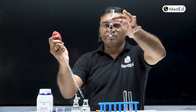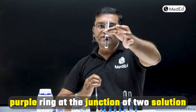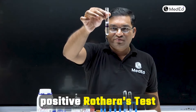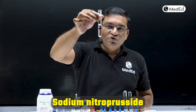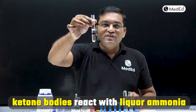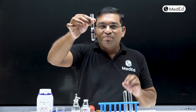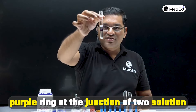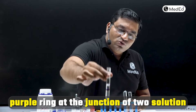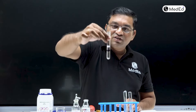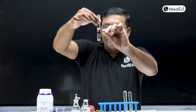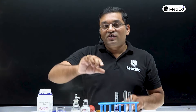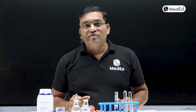The observation is a purple ring at the junction of the two solutions, which indicates a positive Rothera's test. In the presence of sodium nitroprusside, the ketone bodies react with the liquor ammonia and give the purple ring at the junction. If you keep the solution steady, you will get a thin, hair-thin ring.